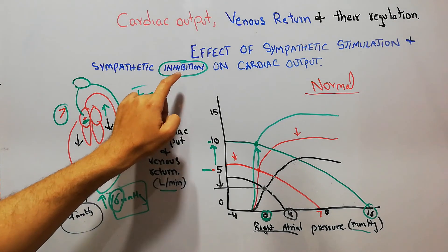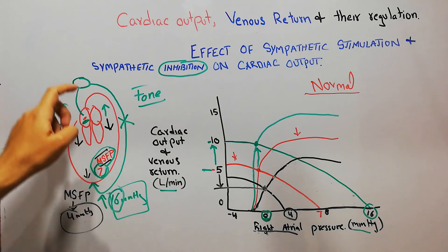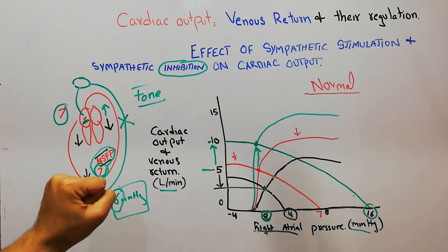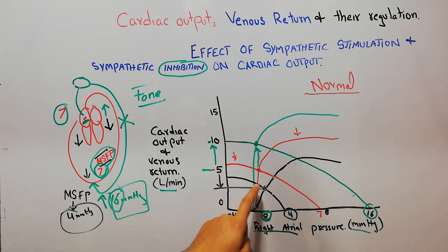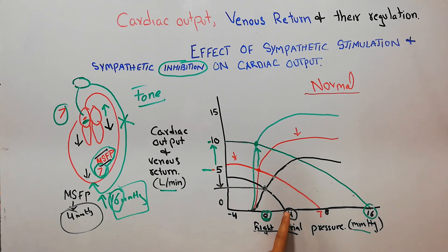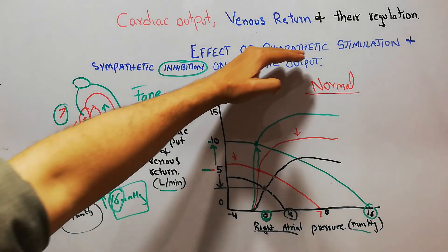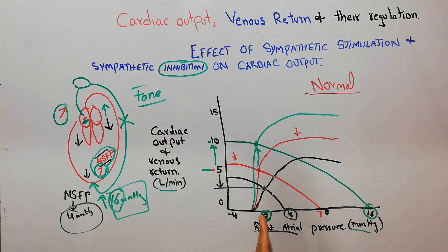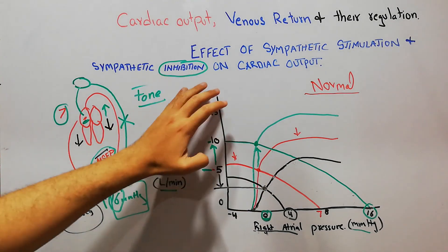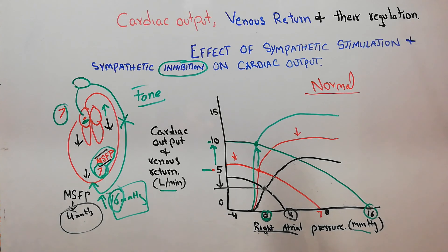If inhibition of sympathetic nerves occurs, the normal sympathetic tone is also lost. Heart rate decreases, pumping power decreases, and sympathetic innervation of peripheral vessels is also reduced. The new cardiac output and venous return curves meet at a lower level, and both fall below normal. Mean systemic filling pressure also decreases, and right atrial pressure only has to rise to around 4 mmHg to bring venous return to zero. In conclusion, sympathetic stimulation increases cardiac output and venous return even at normal right atrial pressure, while sympathetic inhibition decreases cardiac output and venous return even at normal right atrial pressure.